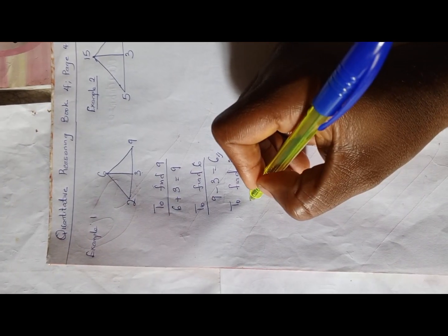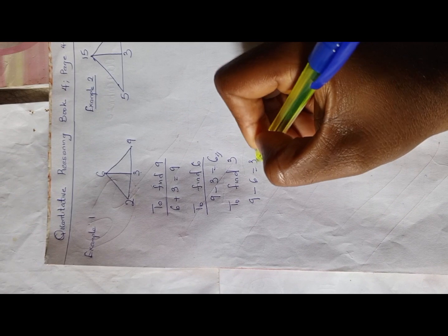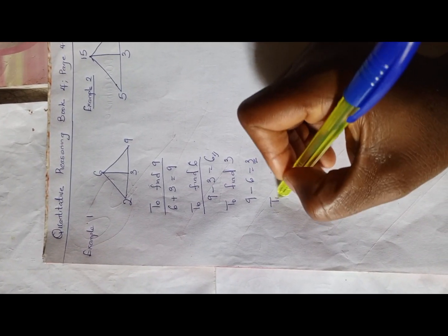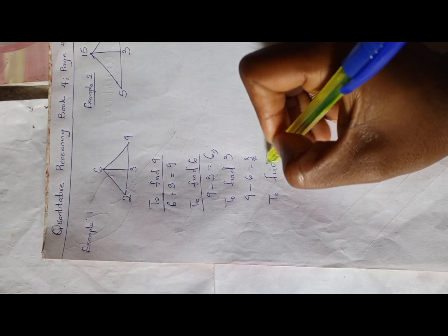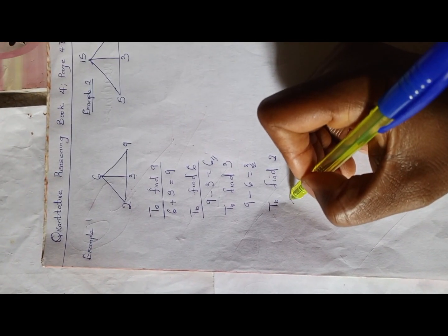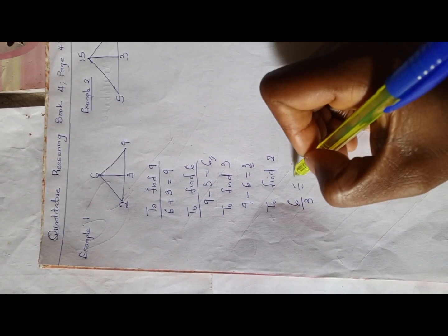To find 2, we have 6 divided by 3, which is 2. So let's adopt the same method for this second example.